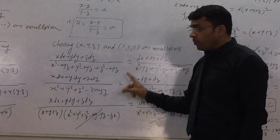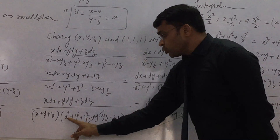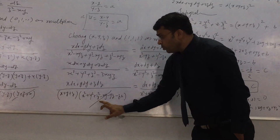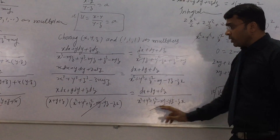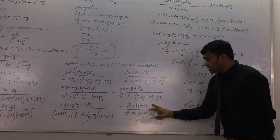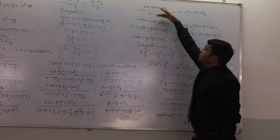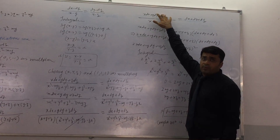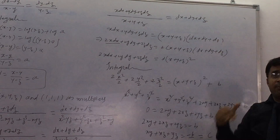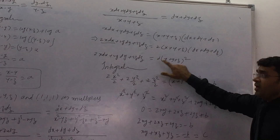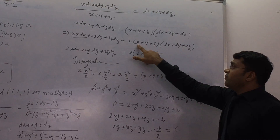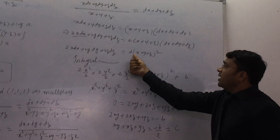We break the first denominator quantity into two parts: x plus y plus z times x squared plus y squared plus z squared minus yz minus zx minus xy, which matches the second denominator. So x plus y plus z cancels, leaving x dx plus y dy plus z dz upon x plus y plus z equals dx plus dy plus dz upon 1. Multiplying the whole equation by 2, the left side becomes the differential of x plus y plus z whole squared.